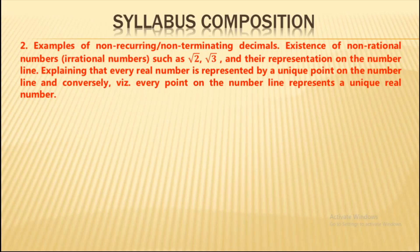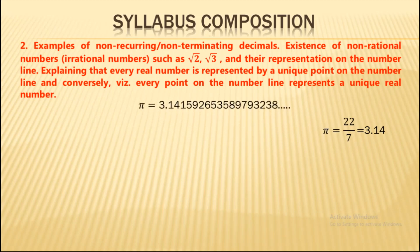The most well-known irrational number is pi. We commonly use pi = 22/7 or 3.14, but do you know that this is not the exact value of pi? If we calculate pi to 20 decimal places, we get 3.141592653589793238, and it continues beyond that.